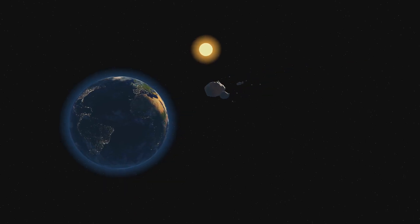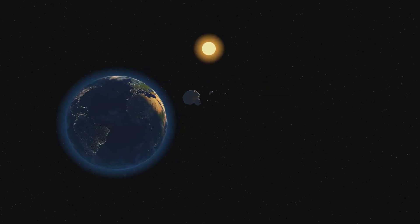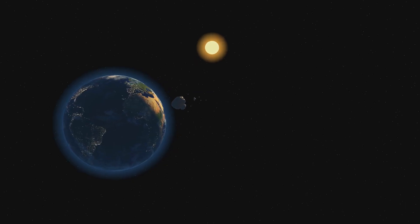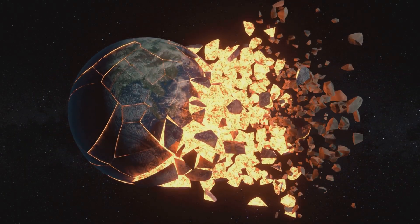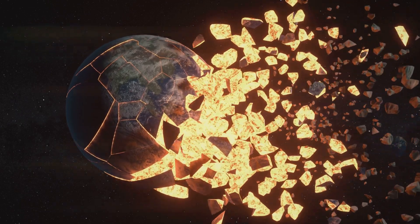While Earth was still in its infancy, a dramatic event occurred that would forever shape our planet and its companion. A Mars-sized object named Theia collided with the young Earth in a cataclysmic impact. The energy released was unimaginable, vaporizing a significant portion of both bodies.